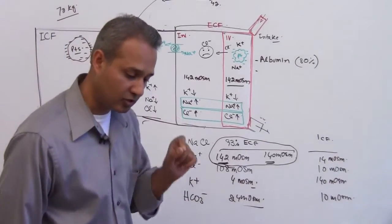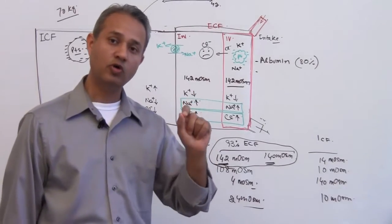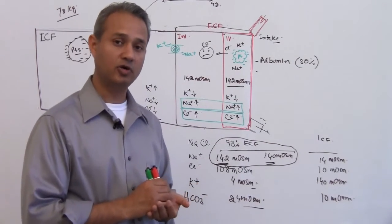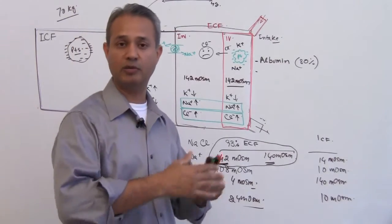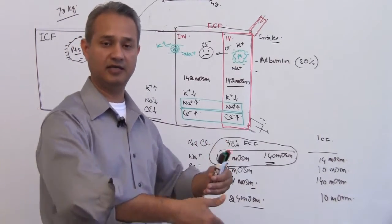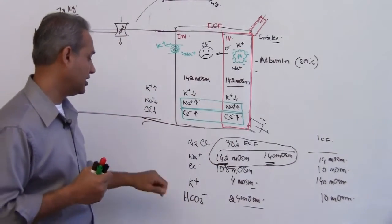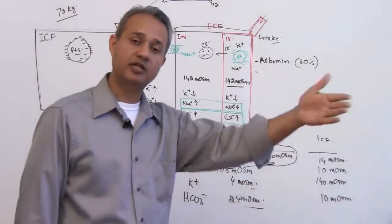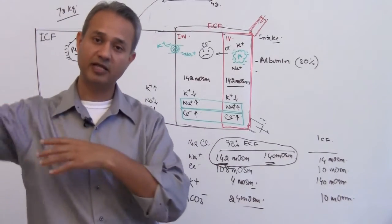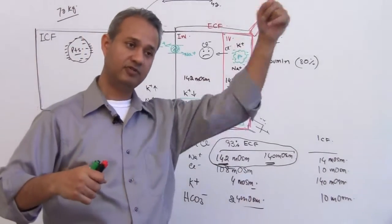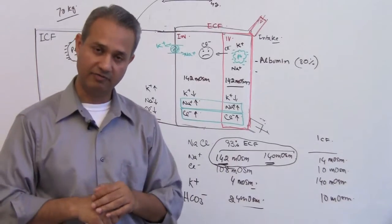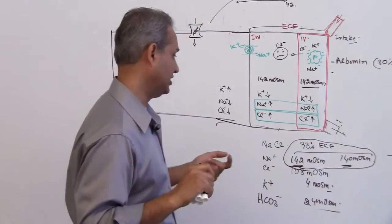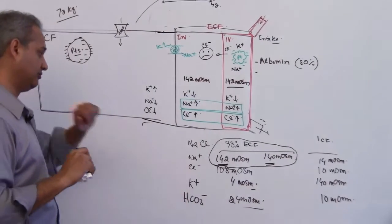You need to understand the compositions of various elements and know what pathological situation will be produced if that composition is disturbed. Many doctors try to memorize: here is a pathological situation, and these are the electrolyte changes — that is wrong. Instead of asking what happens to bicarbonate in acidosis or alkalosis, ask: if bicarbonate is less, what would that do? If potassium is less, what would that do? Focus on the molecule itself — bottom up, not top down — and that is where you gain a true concept of disease.